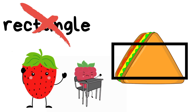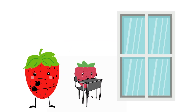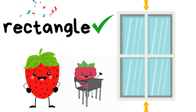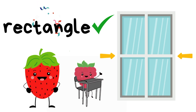What about this shape — is this a rectangle? Does it have four sides? Are two of them shorter? Are two of them longer? Yep, this is a rectangle! You can see the two short sides here and you can see the two long sides here.